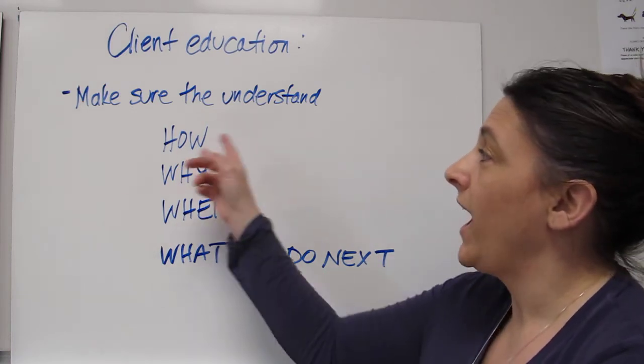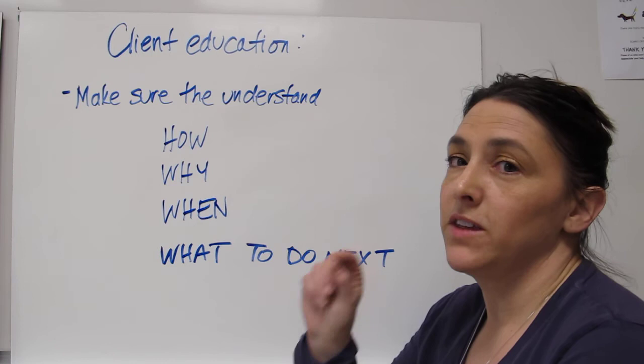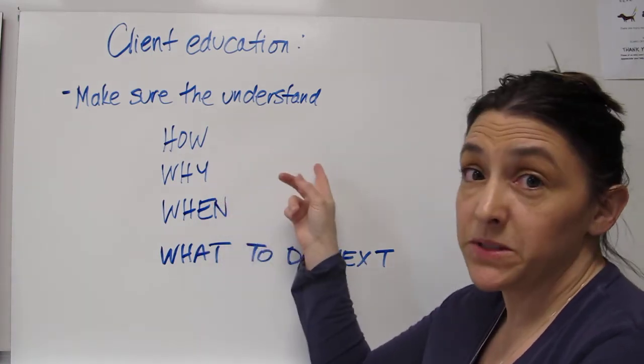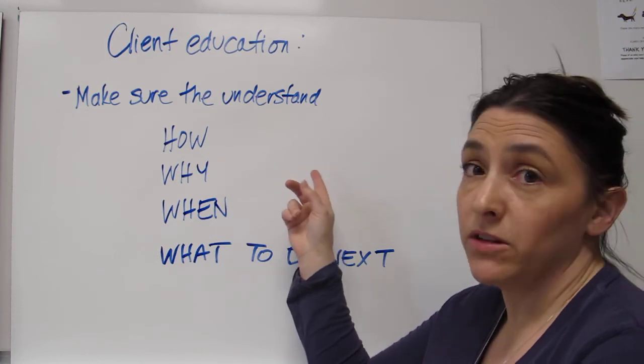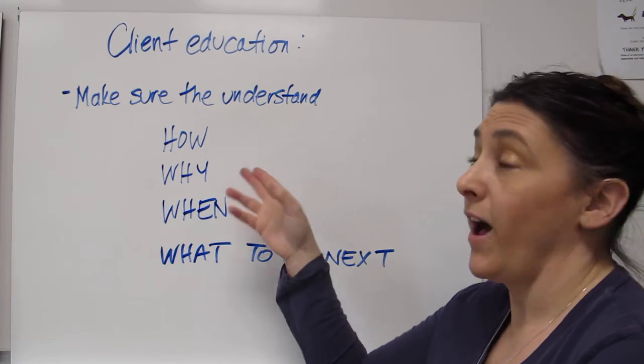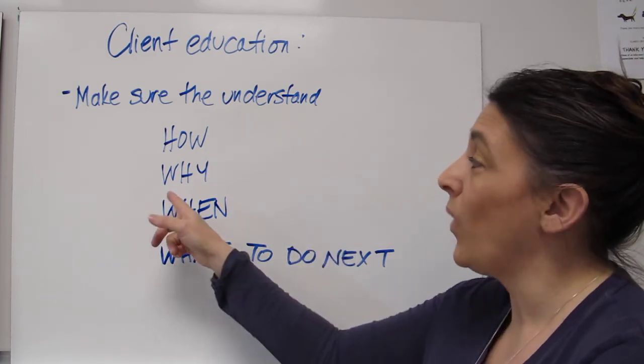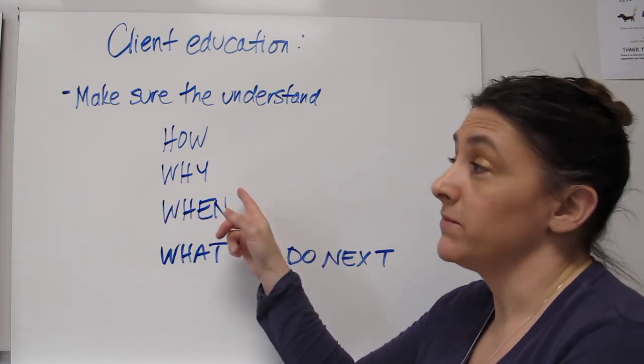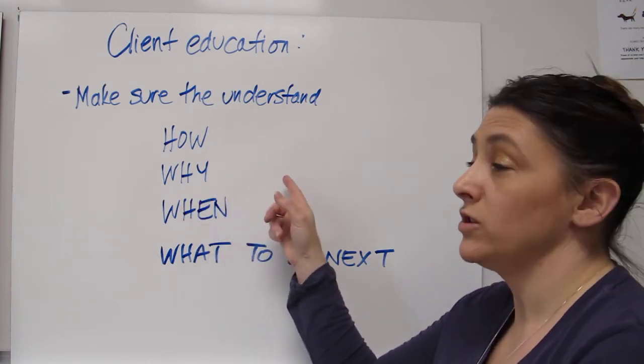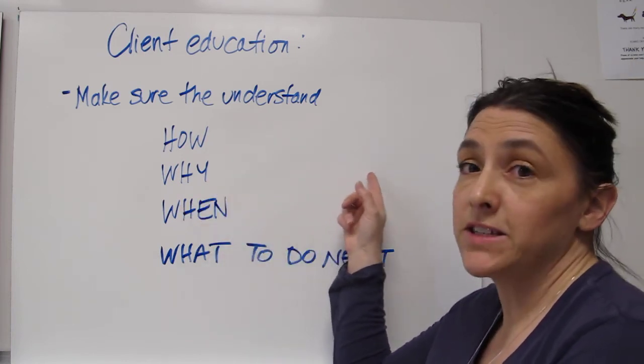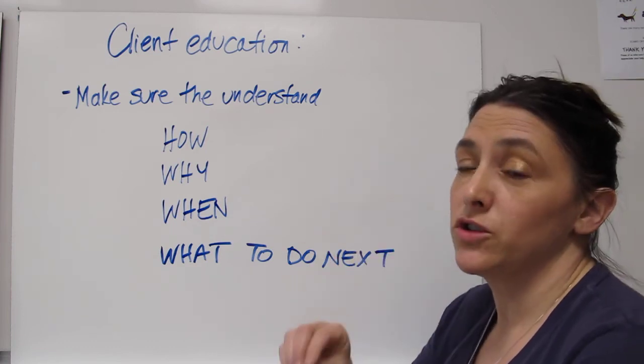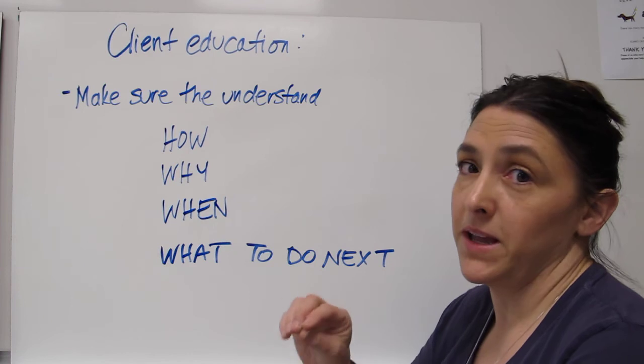So how are we going to give it? We're going to give one tablet in the mouth. Maybe give some suggestions on how to pill the dog or put it in a little bit of cheese, how to pill the cat. Why are we giving it? Does Fluffy have an infection? So Fluffy has an infection, so we're using this antibiotic to help with that infection. Please make sure you use all of the medication.